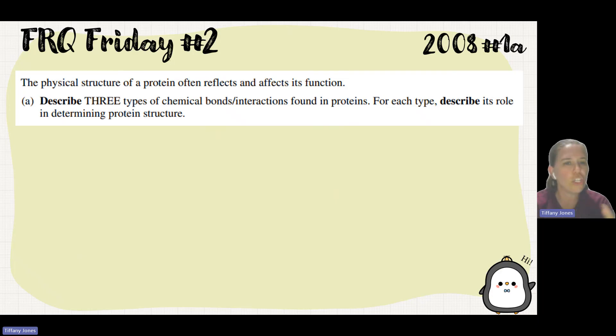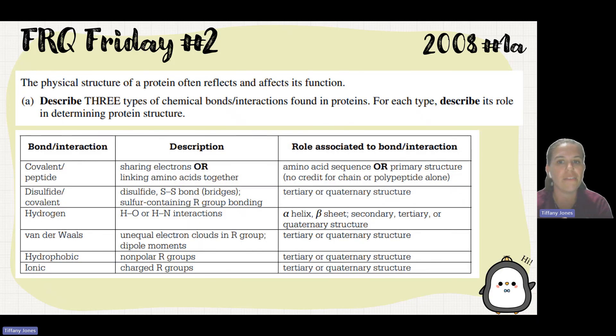Any bond you know - covalent, ionic, hydrogen, van der Waals, hydrophobic interaction, disulfide linkages - can occur as long as it's taking place between the R groups. Quaternary has to do with multiple polypeptides and their R groups interacting. They wanted you to describe different types of bonds and give a role associated with it: covalent bonds sharing electrons linking amino acids together giving primary structure, disulfide linkages in tertiary or quaternary due to R groups, hydrogen bonds between electronegative atoms.